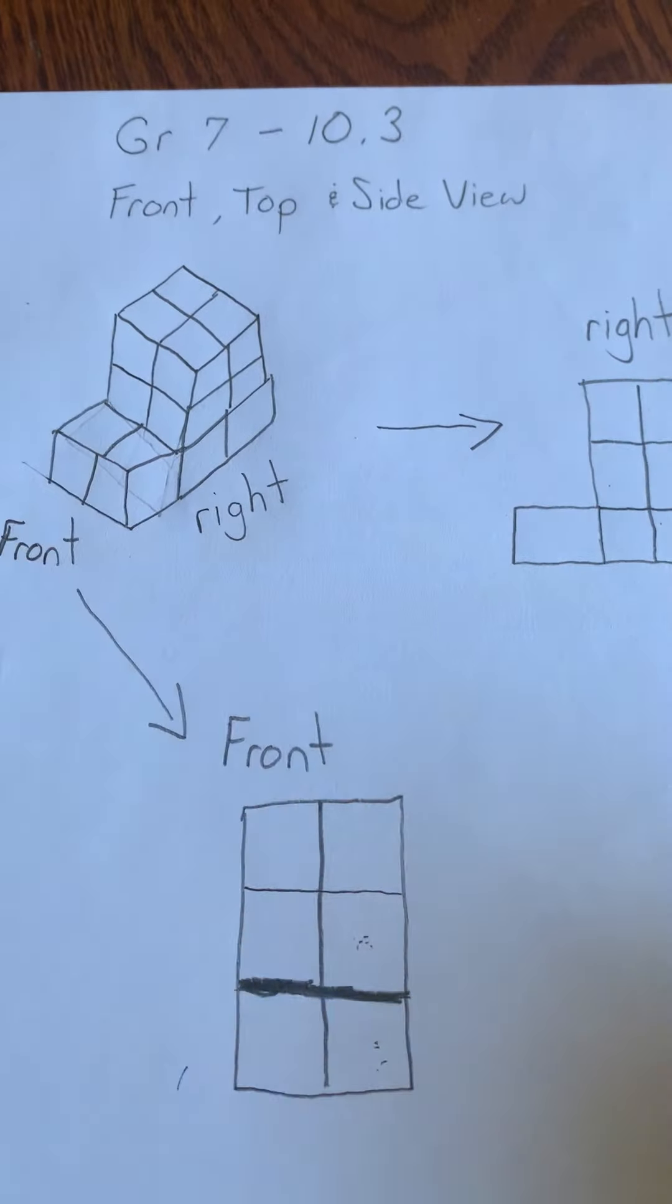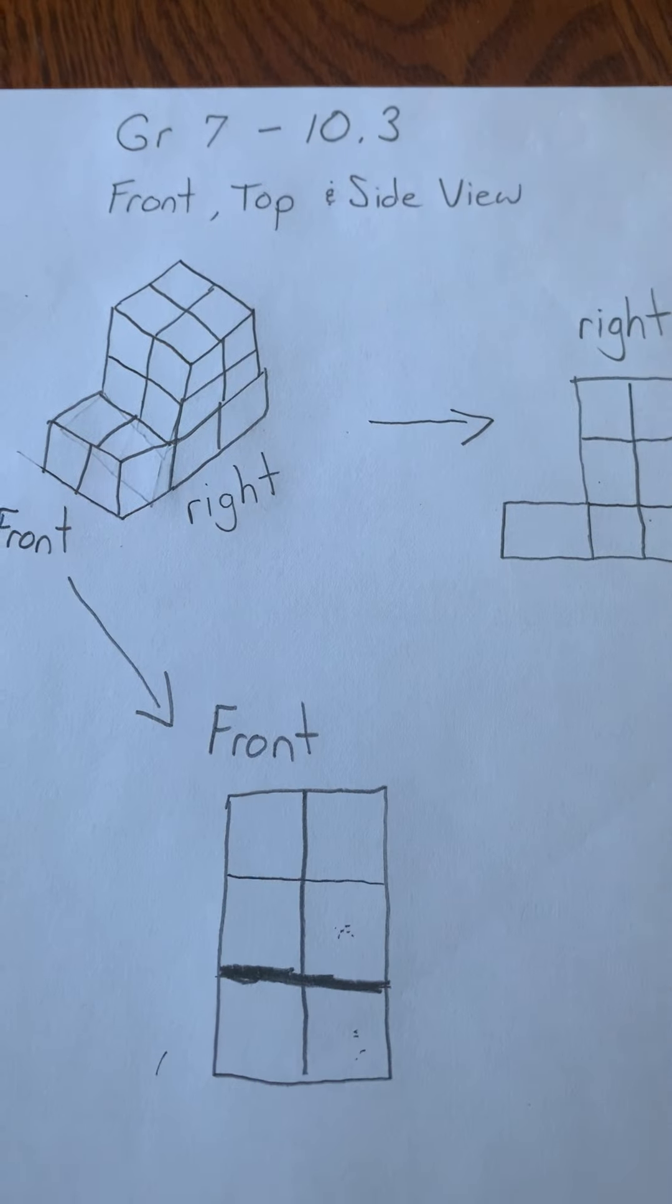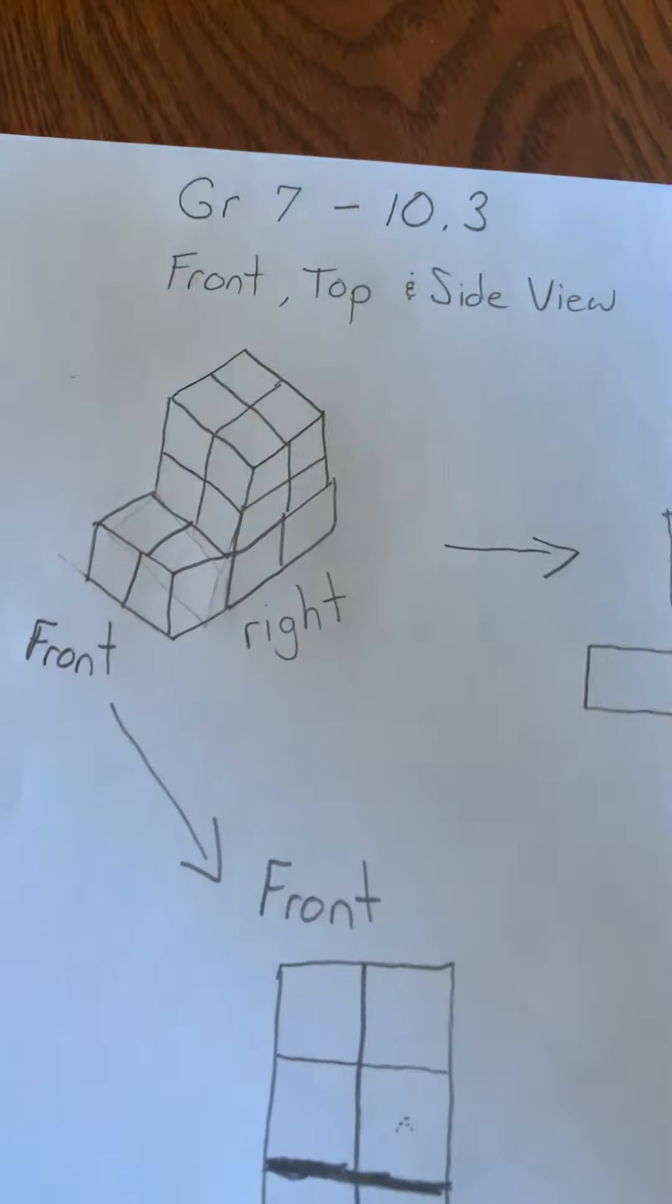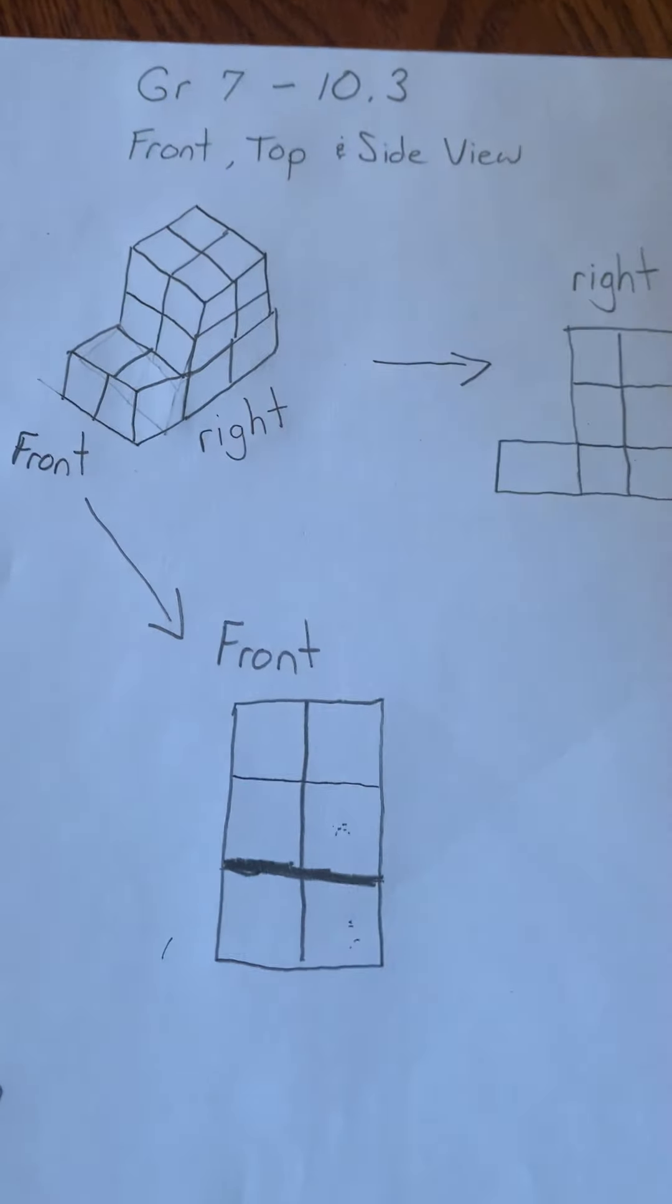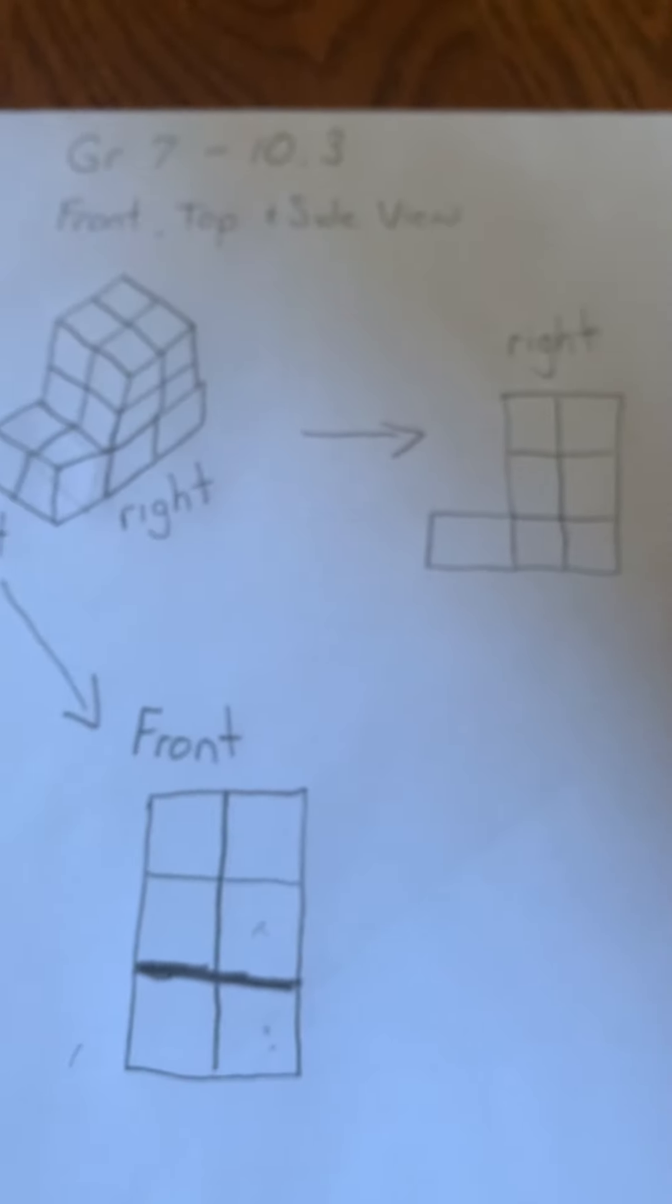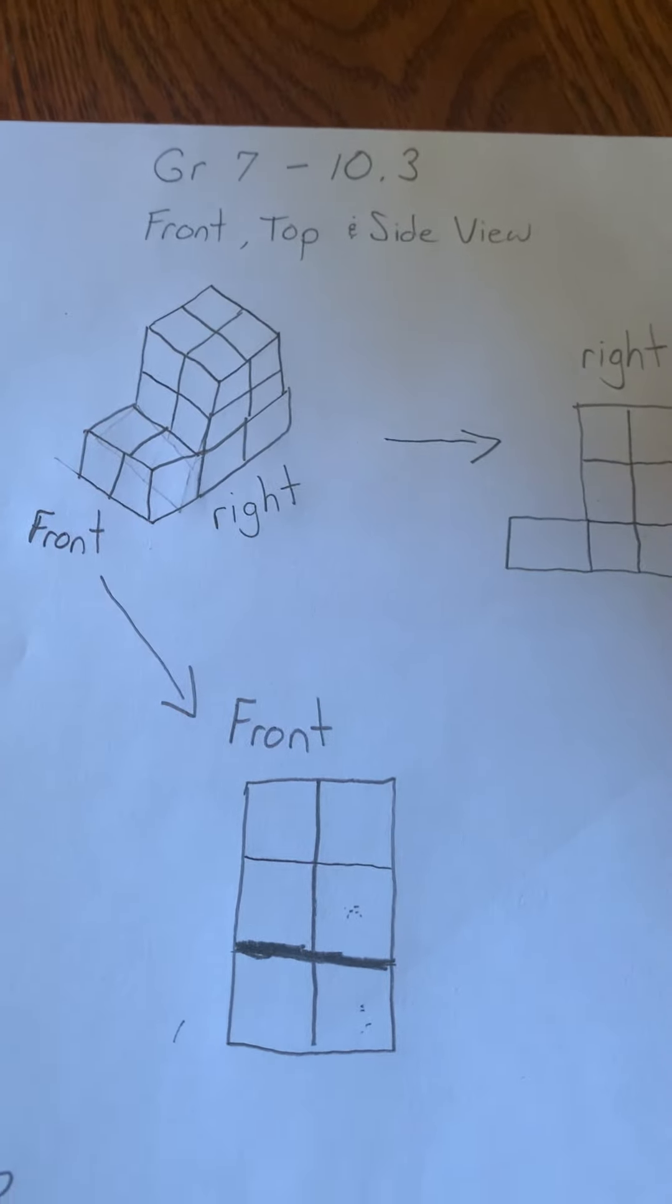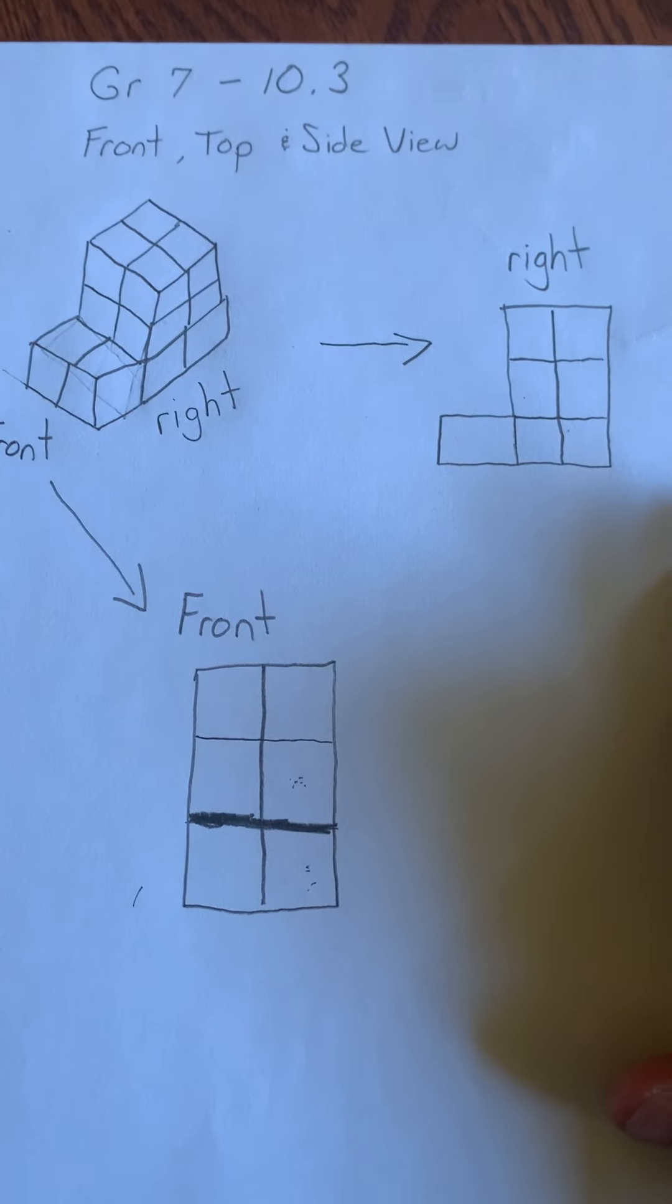So generally speaking, this is kind of what the grade sevens are going to be doing today. You may find that you get distracted by other Lego pieces like boats and other miscellaneous pieces, but there's nothing wrong with playing with some Lego for the day. But generally speaking, you're looking at doing these kinds of things today. You're doing front, top, right, left side views.